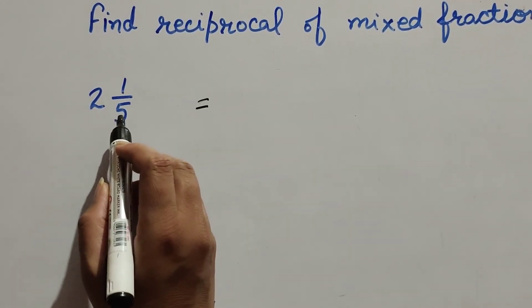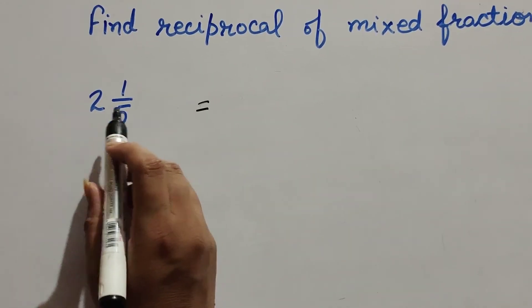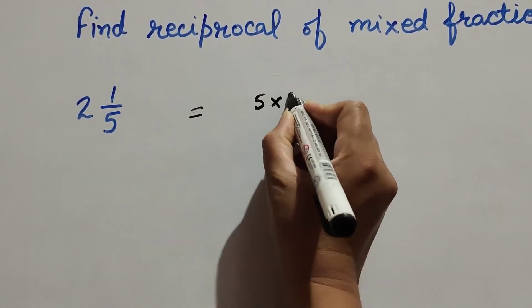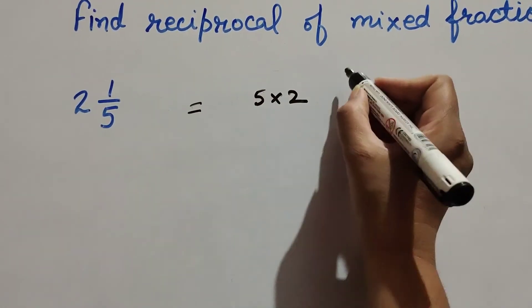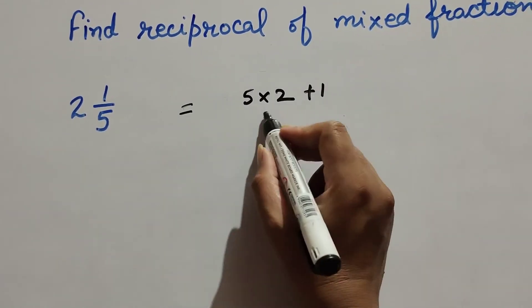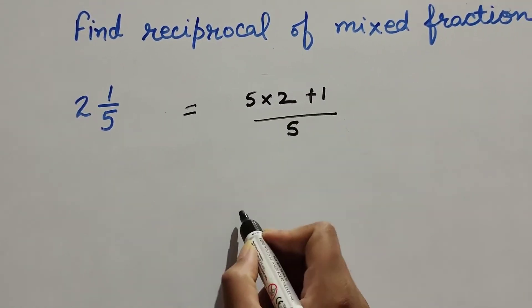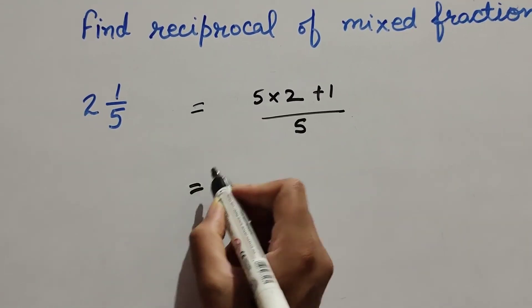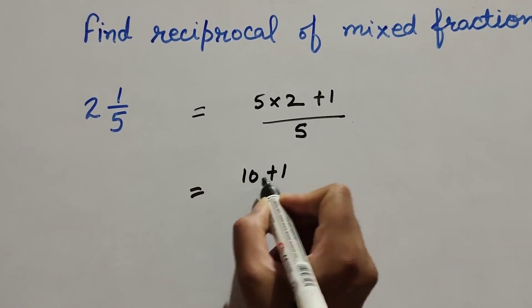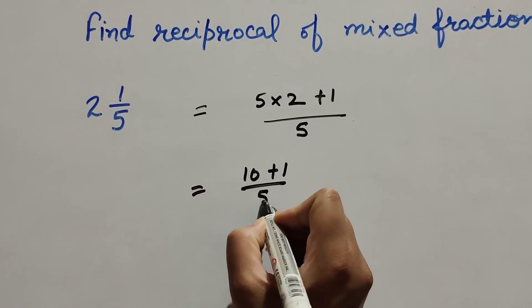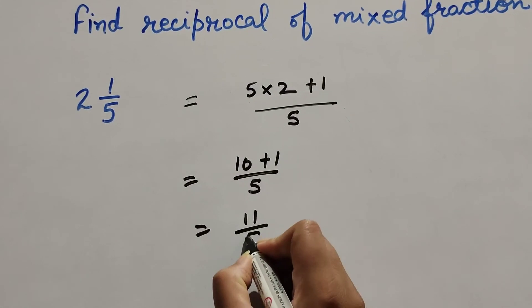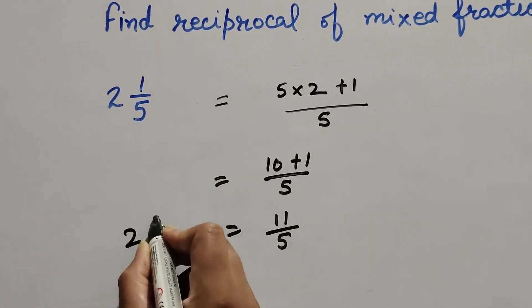To convert, take the denominator of the fraction multiplied by the whole number: 5 multiplied by 2, then add the numerator 1, all over 5. 5 multiplied by 2 is 10, plus 1 equals 11, so we get 11 upon 5.